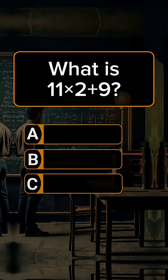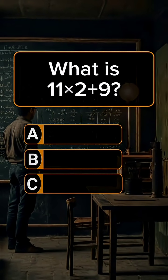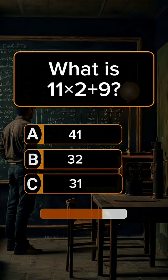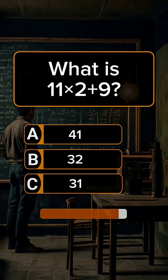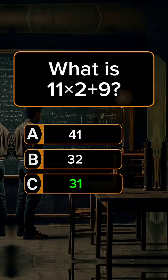Question 6. What is 11 times 2 plus 9? Answer C: 31.